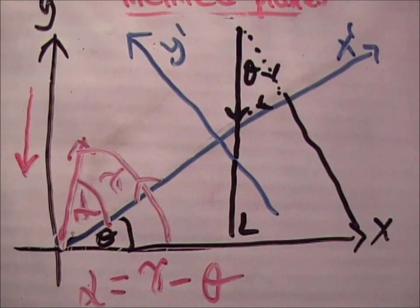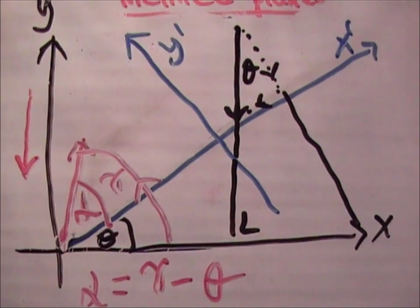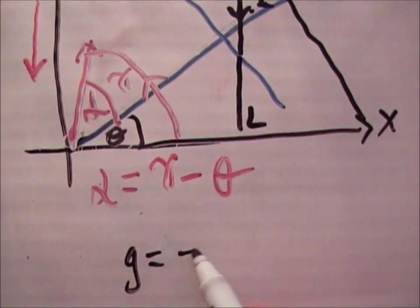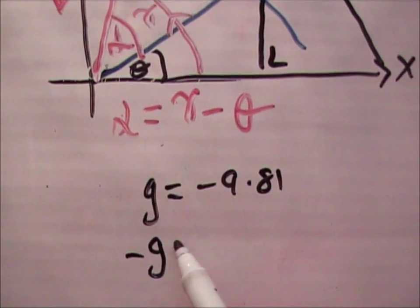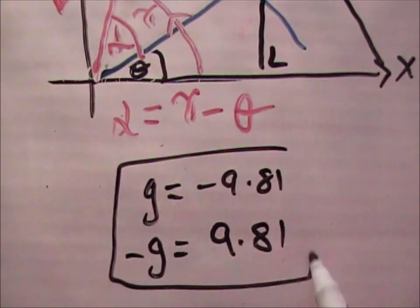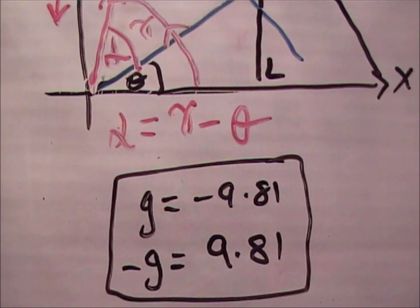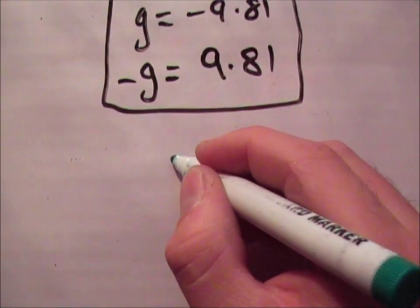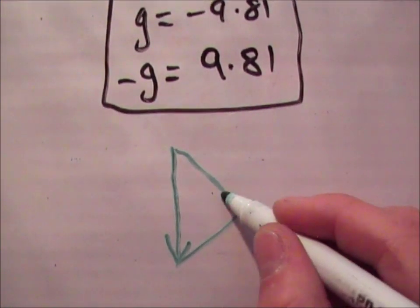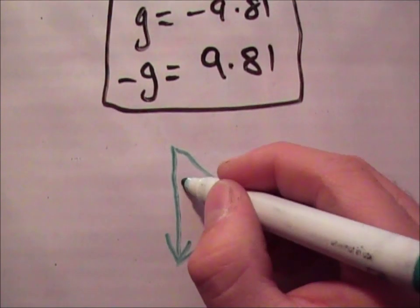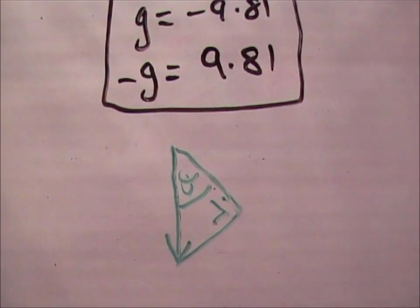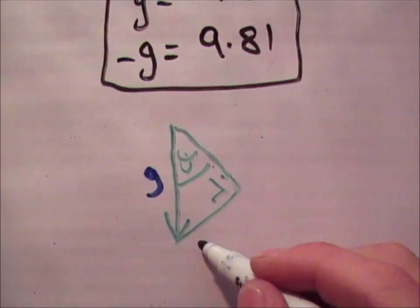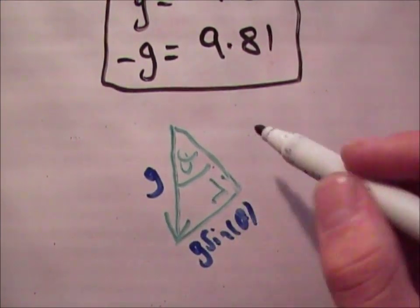g theta and sin theta. Now if you're remembering the sign, that g is equal to minus 9.81. The book will tell you that minus g is equal to 9.81. And this here, this is the vector g, this will be g sin theta, and this is g cos theta.